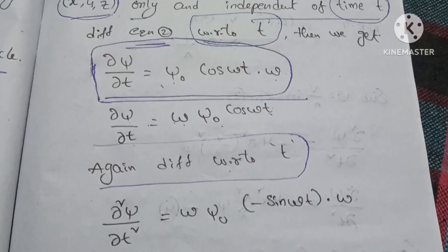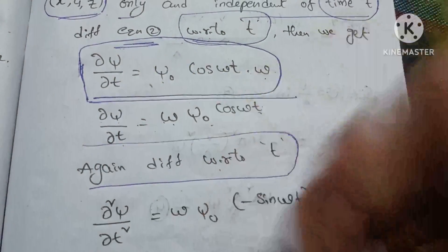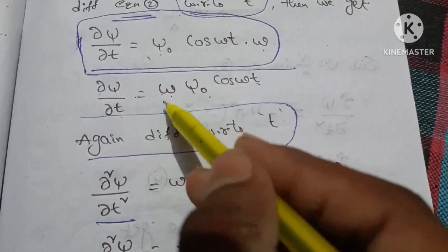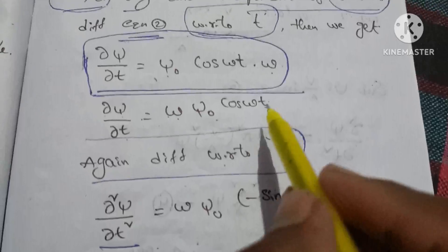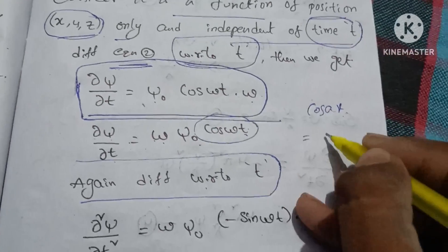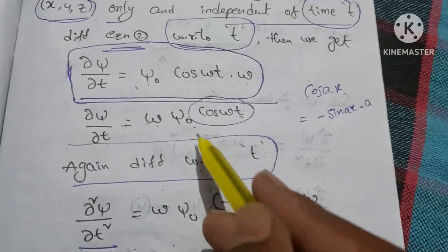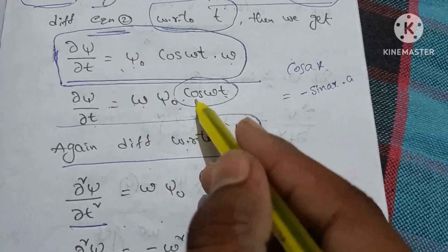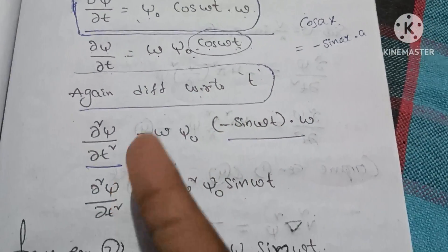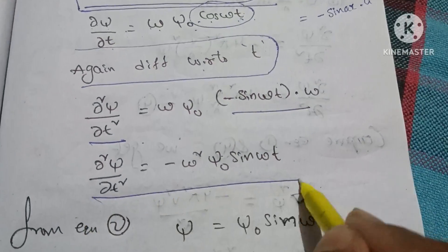Again differentiating with respect to t, we get the double derivative: d²ψ/dt² is equal to omega times sin(art) times the derivative of cos(ωt), which gives minus sin(ωt) times omega. So d²ψ/dt² equals minus omega squared times sin(art)·sin(ωt).